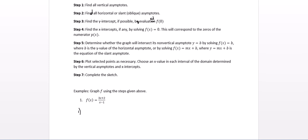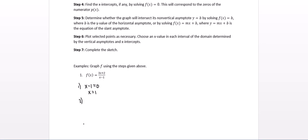First step is we're going to find all vertical asymptotes. So we'll set the denominator equal to 0 and solve. So we'll have a vertical asymptote at x equals 1. Step two, find all horizontal or slant asymptotes. When I compare the degree of the numerator to the degree of the denominator, I find they're both linear. So I know that y equals 3 over 1, or y equals 3 is a horizontal asymptote.